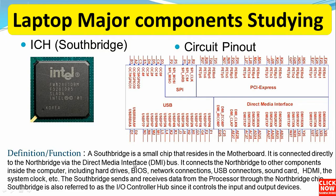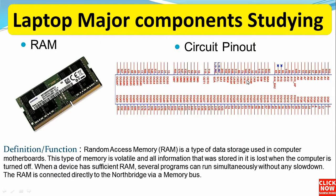The South Bridge is also referred to as the Input Output Controller Hub since it controls the input and output devices. Next is the RAM or Random Access Memory, which is one of the most important parts in every computer — without the RAM you cannot run the operating system. As a definition, RAM is a type of volatile data storage used in computer motherboards; all information stored in it is lost when the computer is turned off. When a device has sufficient RAM, several programs can run simultaneously without any slowdown. The RAM is connected directly to the North Bridge via the memory bus.